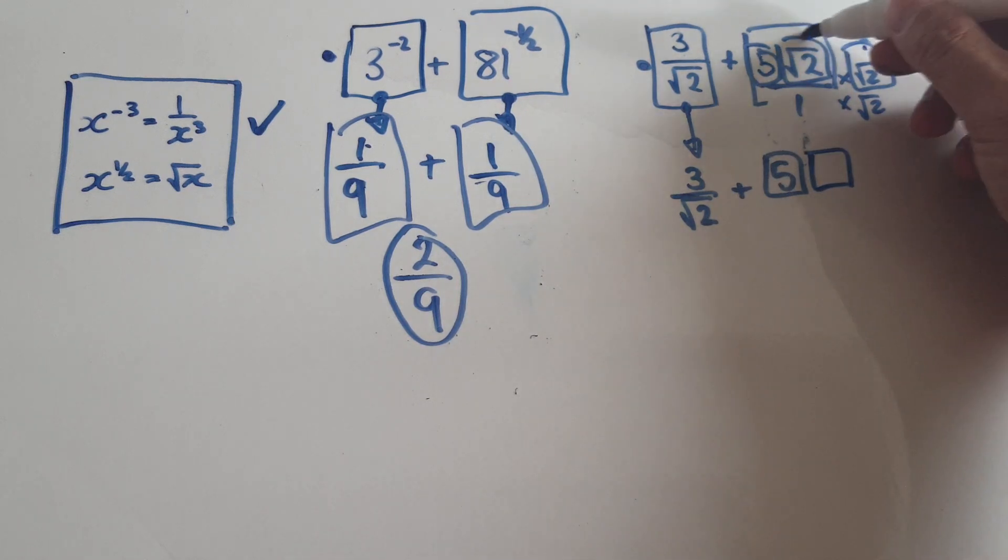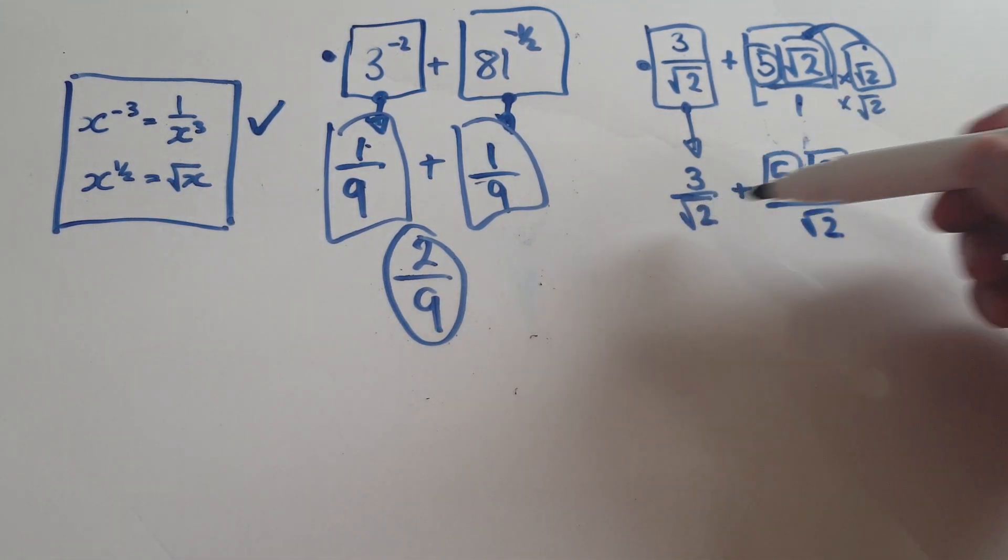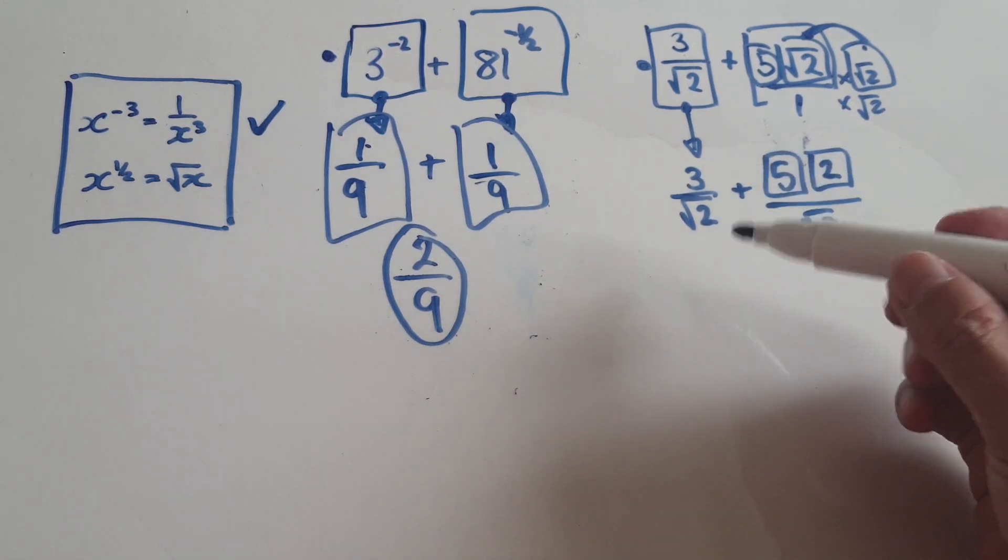When you merge these two together, it would just become the number 2. And then, 1 times root 2, that would be root 2. Oh, what a coincidence. The two denominators are the same, so you can just add the numerators.